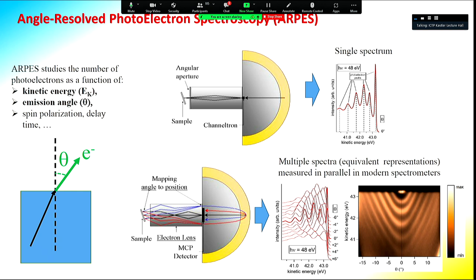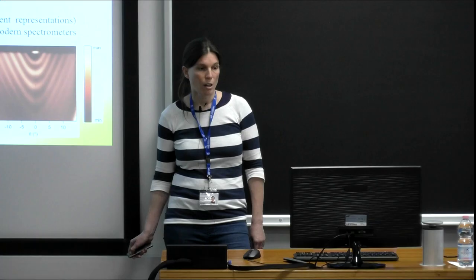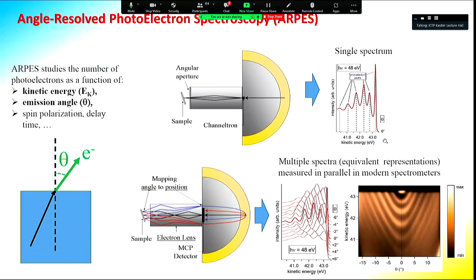When studying the valence band, people normally use angle-resolved photoemission, meaning the emission angles of the electrons are also taken into account. One can use a single-channel analyzer that analyzes one emission angle at a time and rotate the analyzer, or in modern analyzers, take several hundred angles in parallel on the detector — producing around 600 spectra simultaneously. Conventionally, these spectra are shown as image plots where brighter color corresponds to higher intensity.